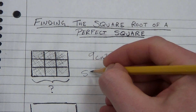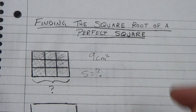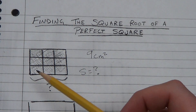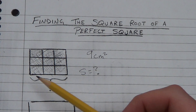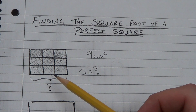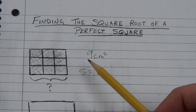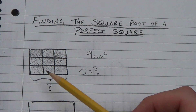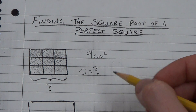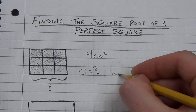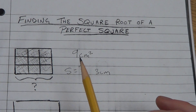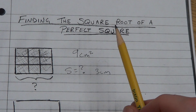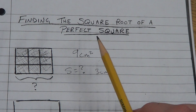What I want to know is what's the side length? You can see here that the side length — talking linear units — is 1, 2, 3 units long. So if these are square centimeters, each 1 centimeter by 1 centimeter, then this side is 3 centimeters long. What I just did was find what's called the square root of a perfect square.